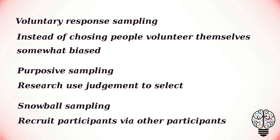The next type of non-probability sampling is snowball sampling. If the population is hard to access, snowball sampling can be used to recruit participants via other participants — the number of people you have access to snowballs by the end of the data collection process. For example, in a questionnaire survey or interview, the data collector asks respondents to provide contact information for other potential respondents. If you are researching experiences of homelessness in your city, since there is no list of all homeless people, probability sampling isn't possible. You meet one person who agrees to participate, and she puts you in contact with other homeless people she knows in the area.